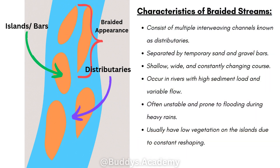Now what are some characteristics of braided streams? They consist of multiple interweaving channels known as distributories, separated by temporary sand and gravel bars. They are shallow, wide and constantly changing course. They occur in rivers with high sediment load and variable flow, and are often unstable and prone to flooding during heavy rains. Because of that, they usually have low vegetation on the islands due to constant reshaping.